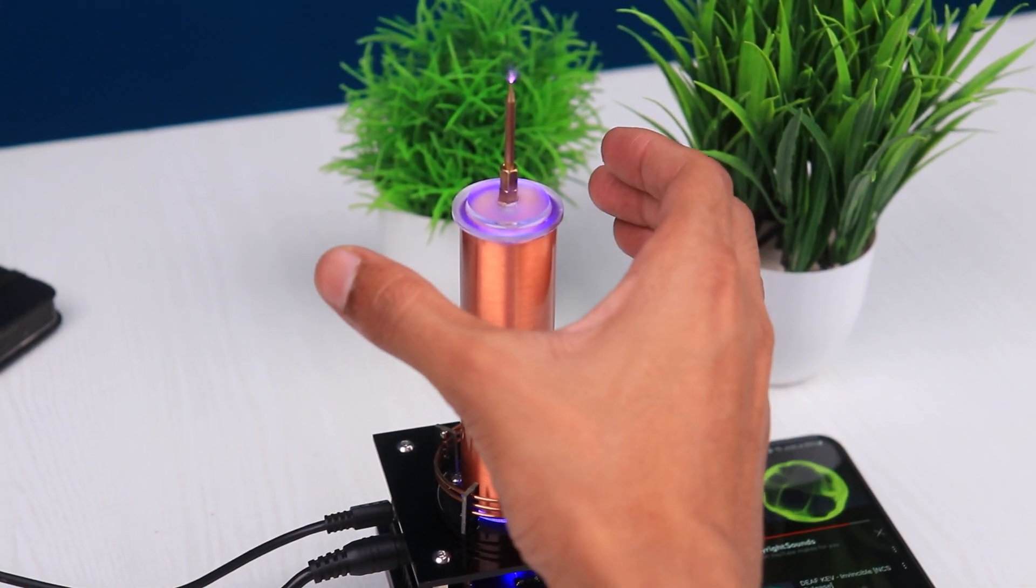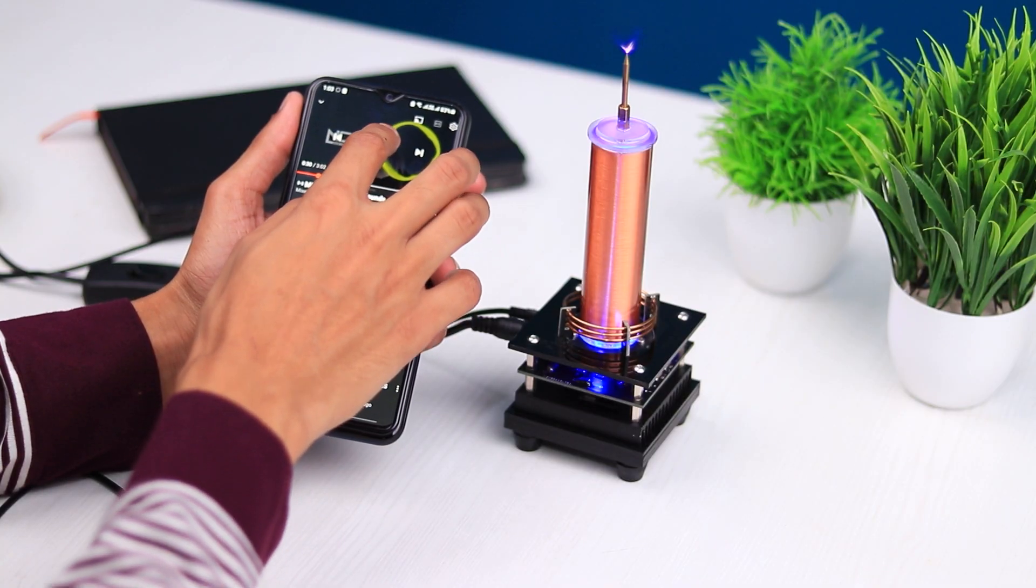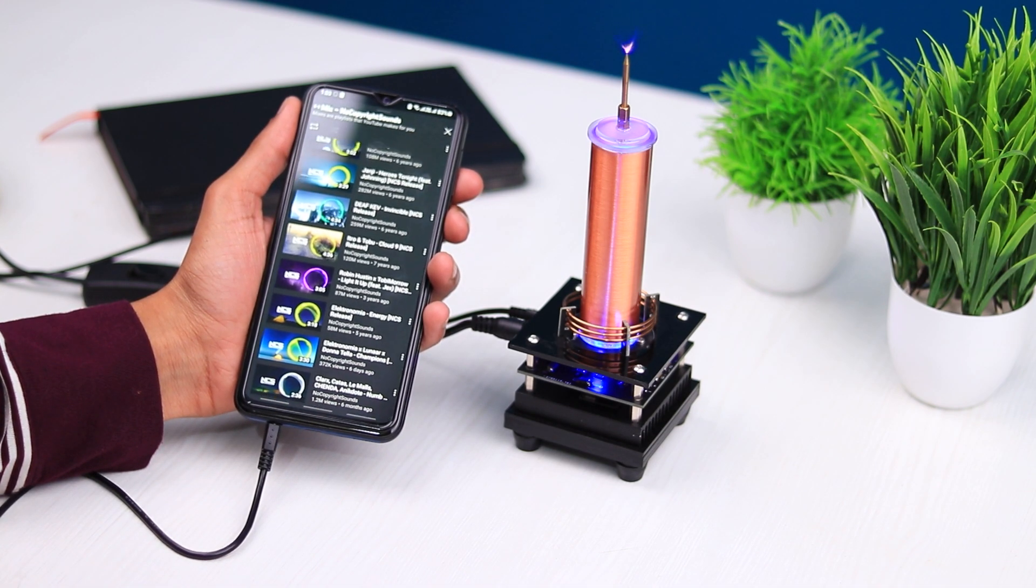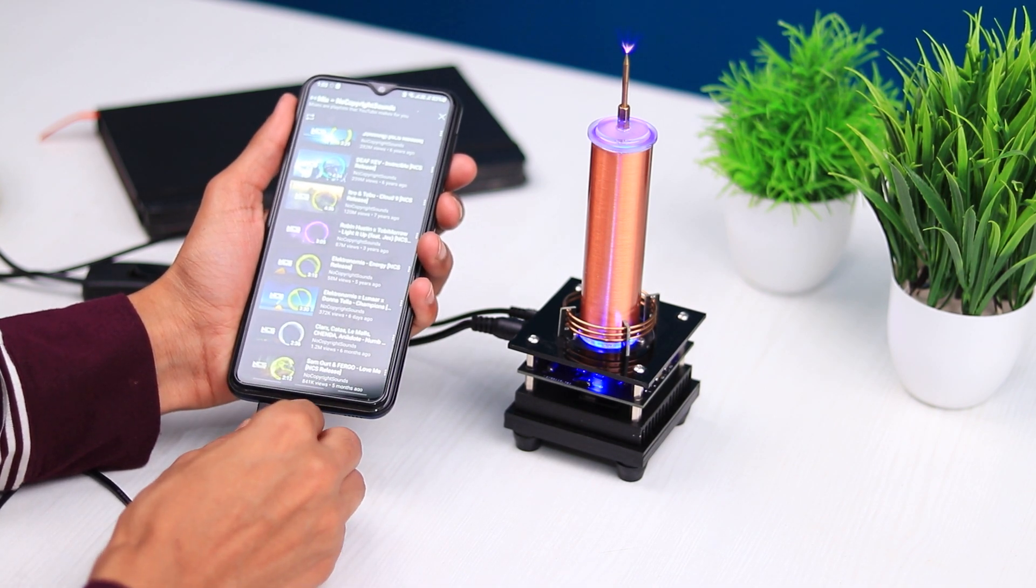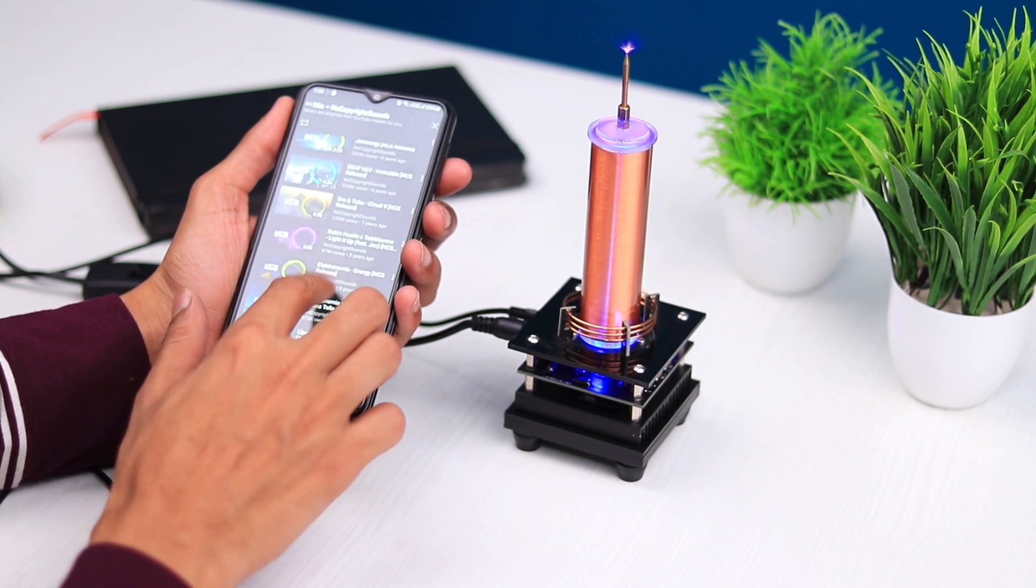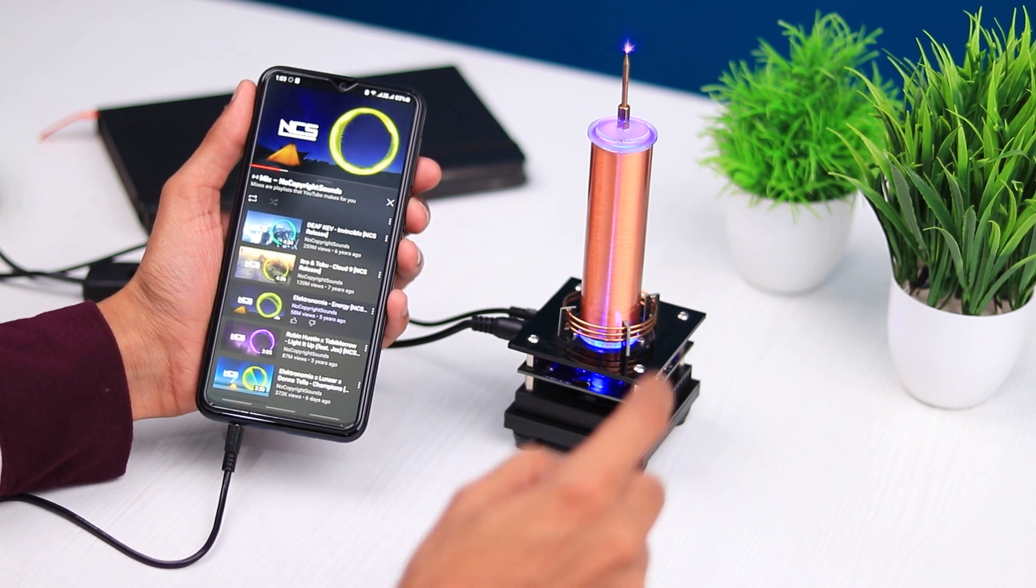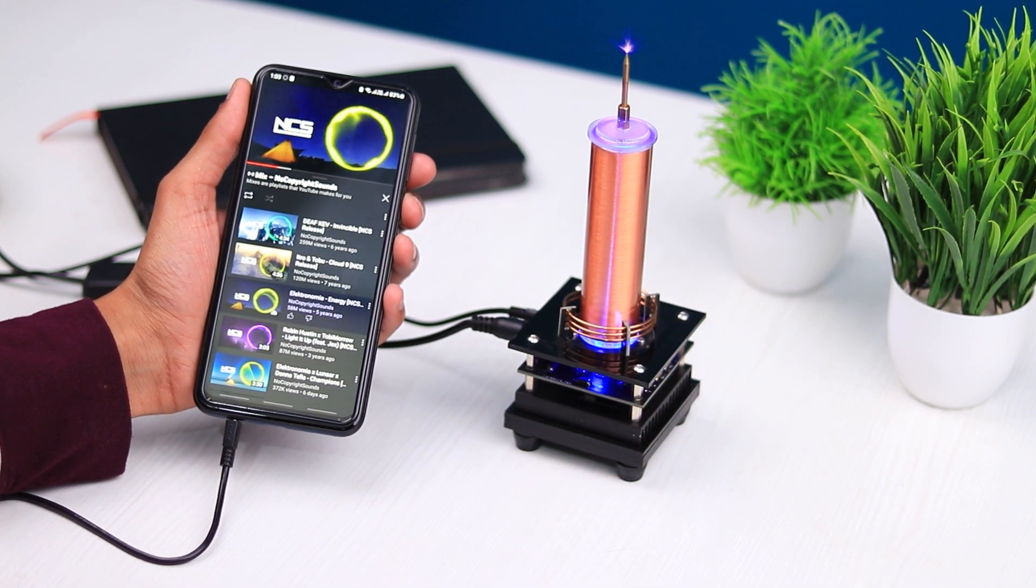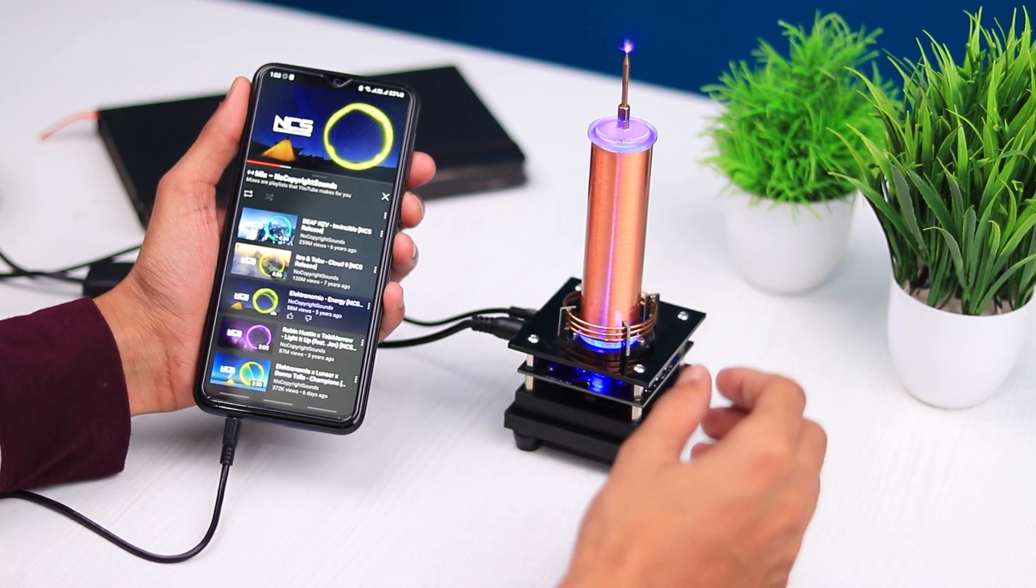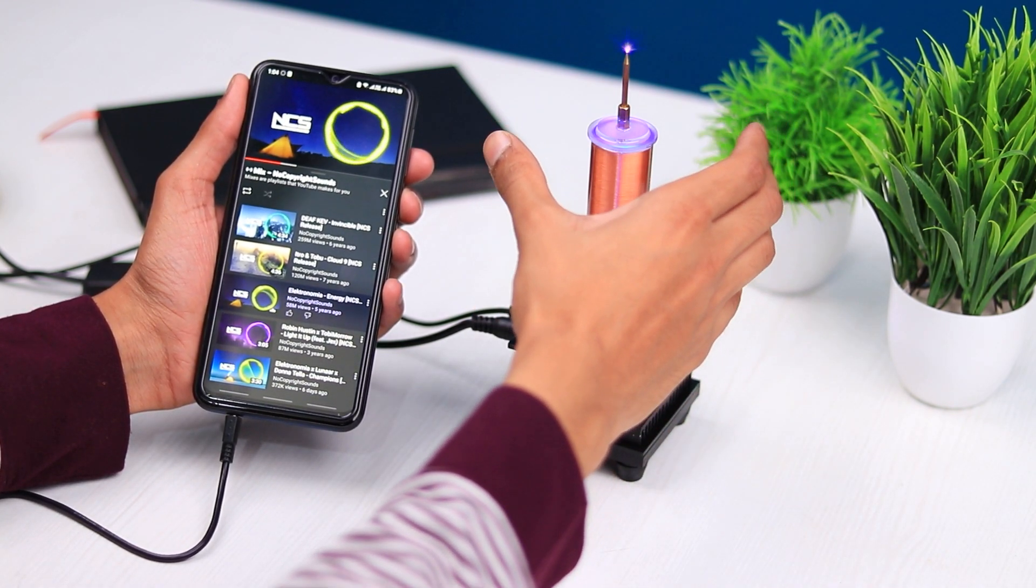And that's why you are hearing music from it with no speakers. In fact, it's just working like a speaker, making the air molecules vibrate. You can see when I put my hand near the Tesla coil, the volume of the music decreases. That's because I am obstructing the air from being vibrated by the Tesla coil.